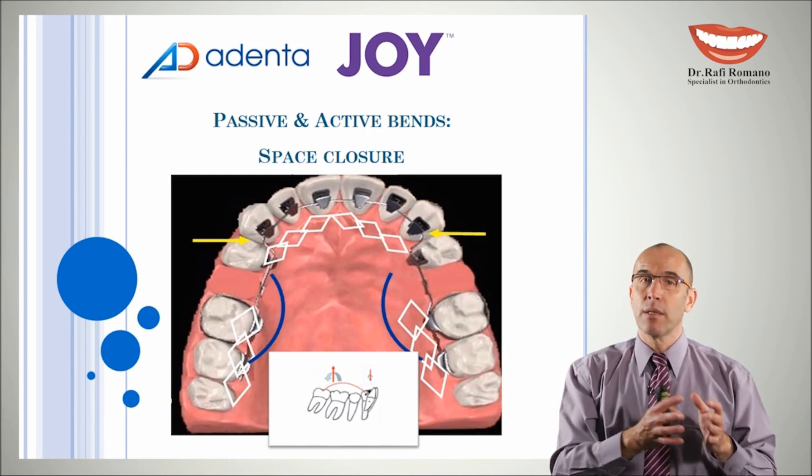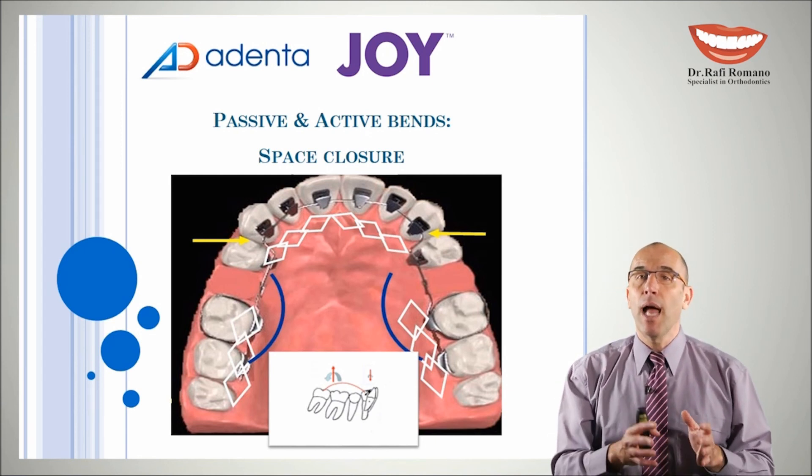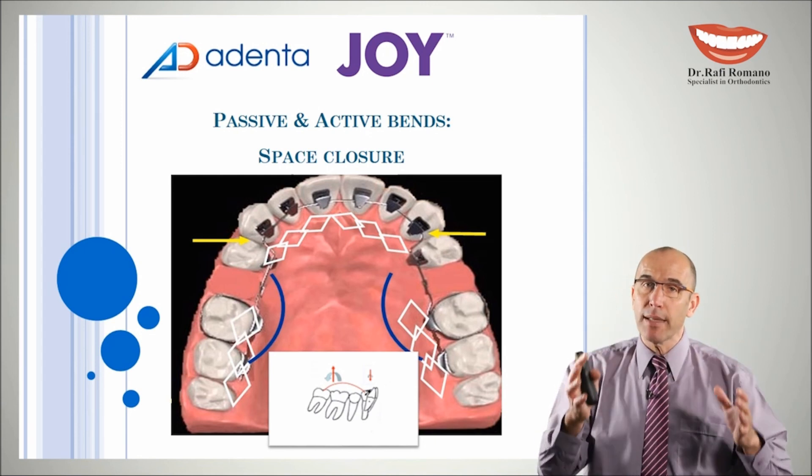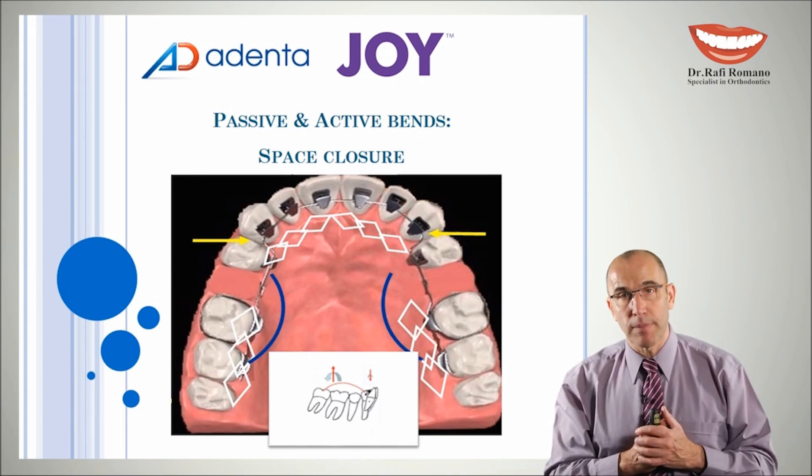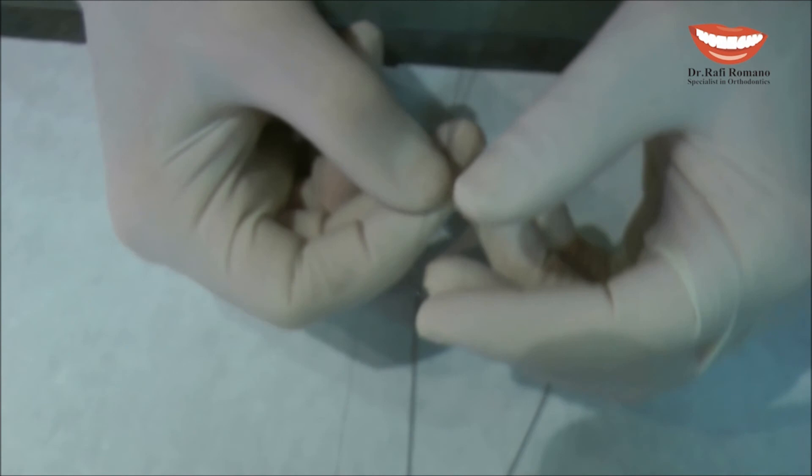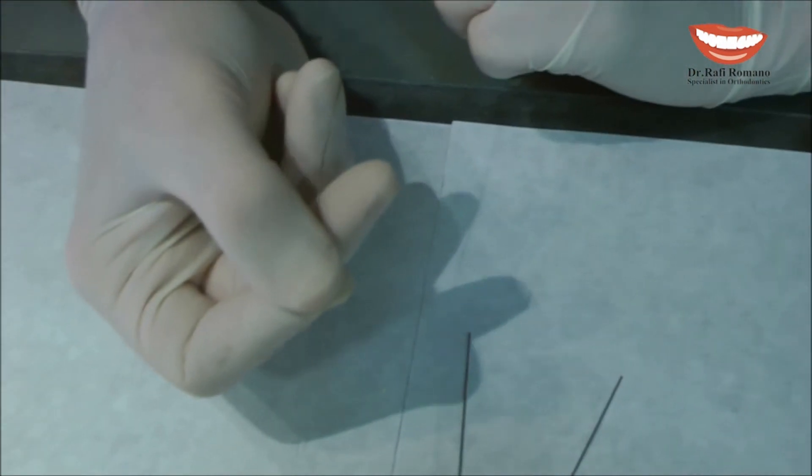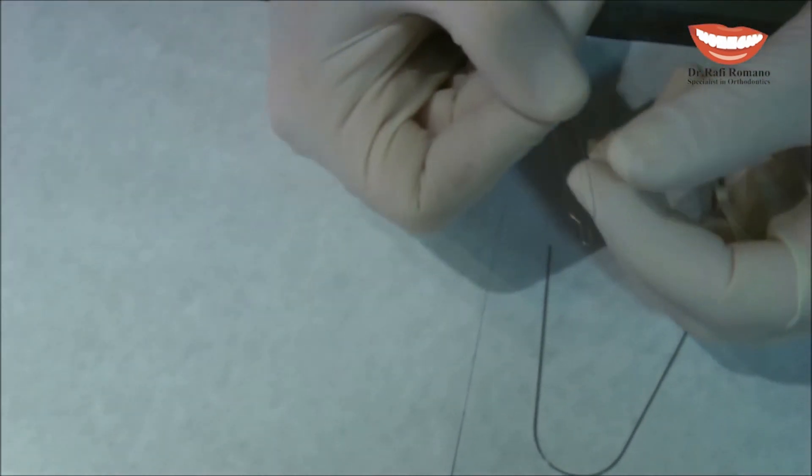So we will learn in this hands-on part how to do this complicated wire for space closure step. For this purpose of the exercise you will use metal ligature.